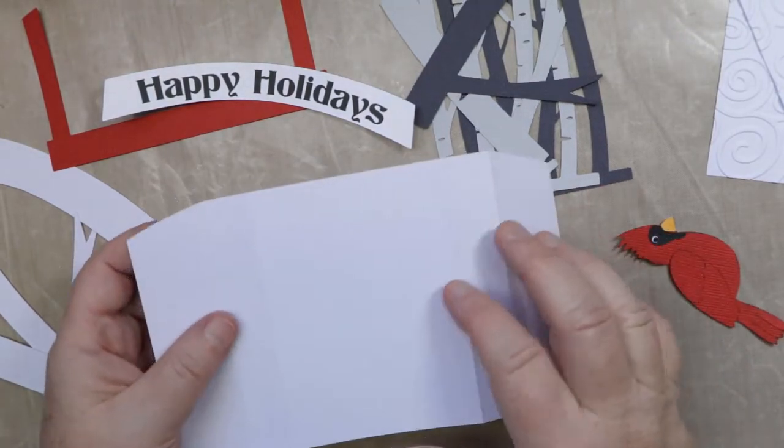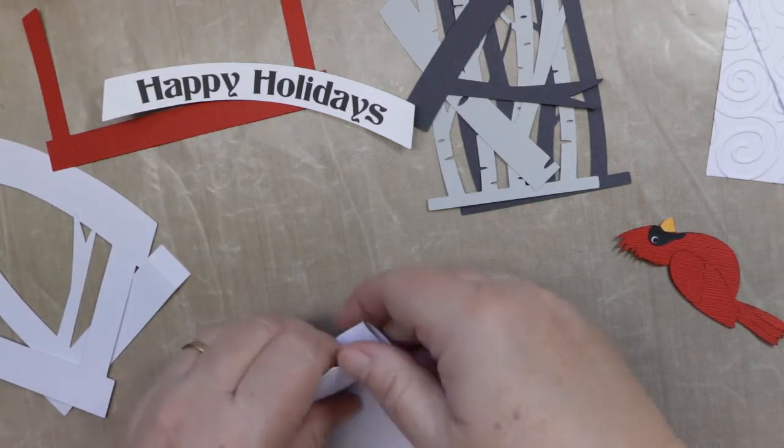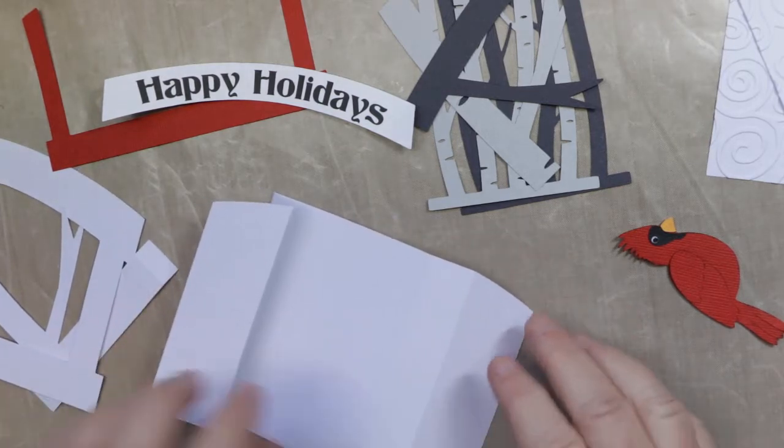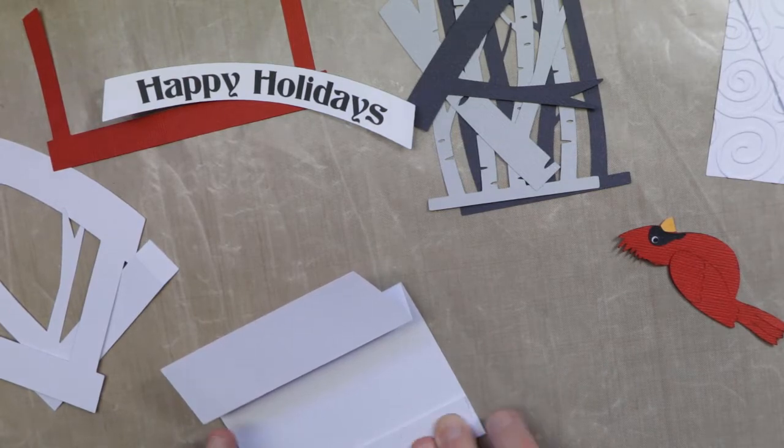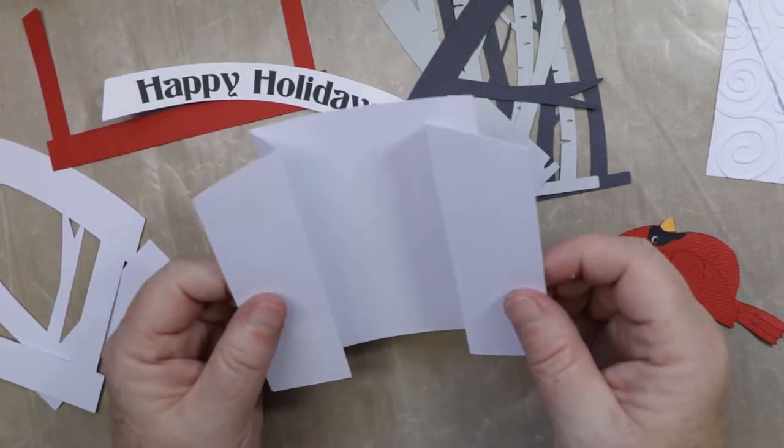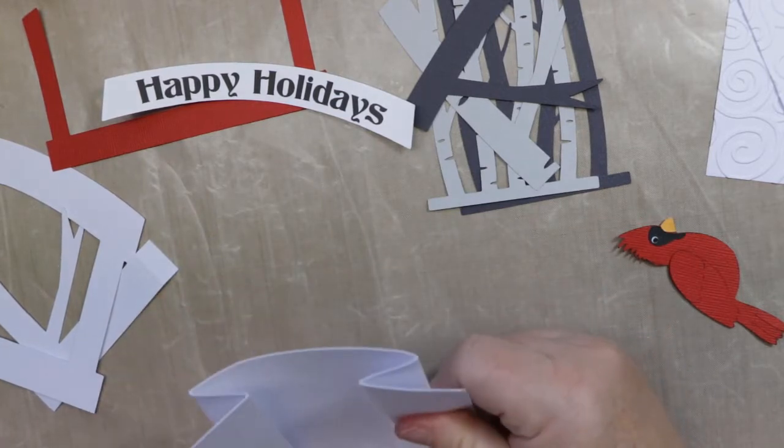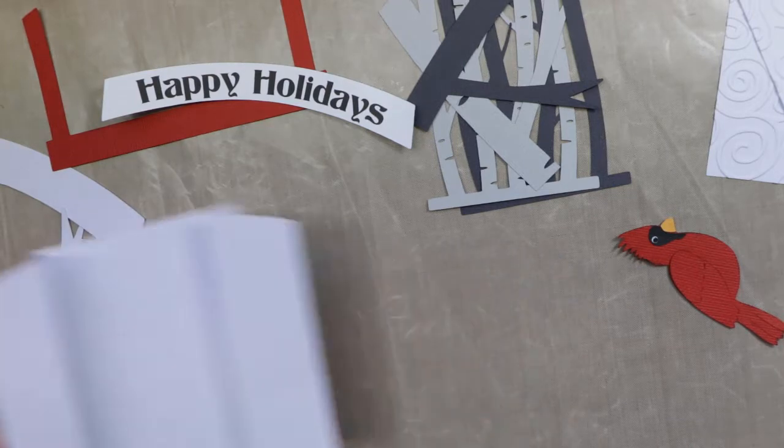So what we want to do is fold it like this, but I'm going to fold it inward here. So you can see how that folds like that. Same thing on the other side. So when we fold, it's going to be like that. So we have a couple more things to layer, but I wanted to show you how that folded.